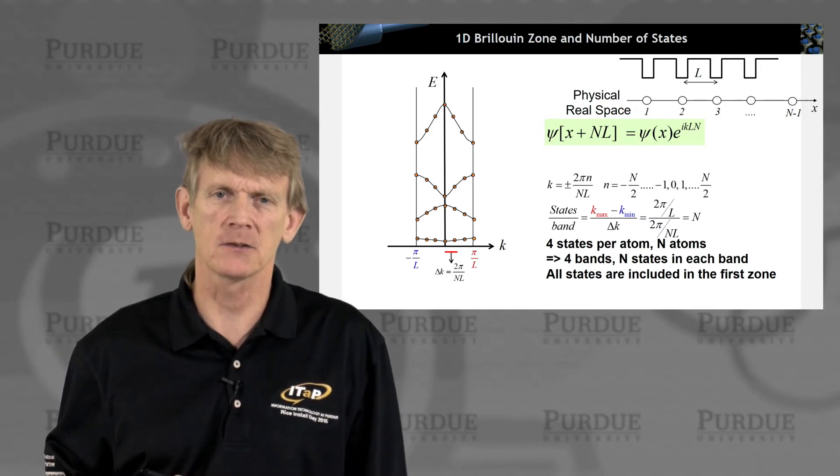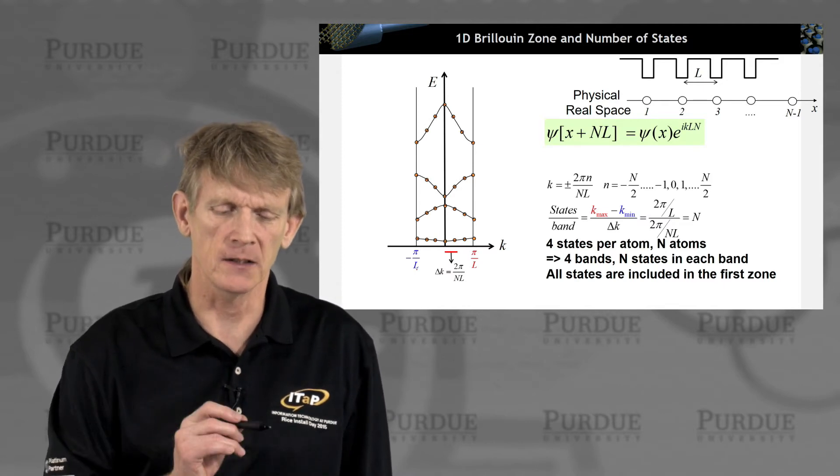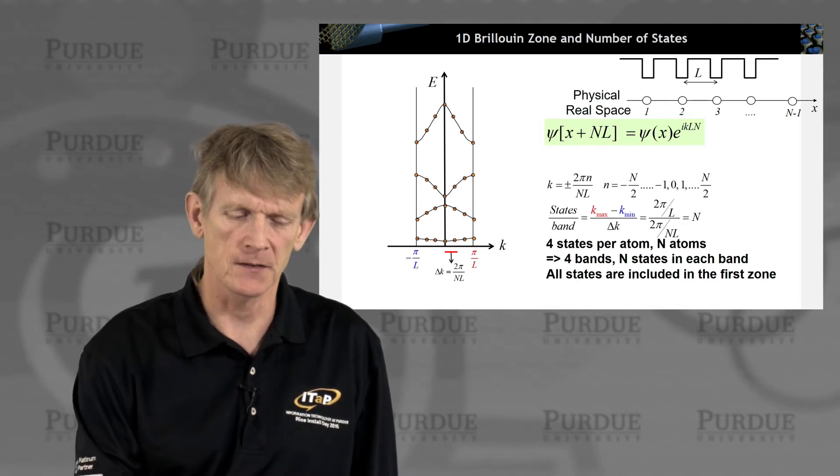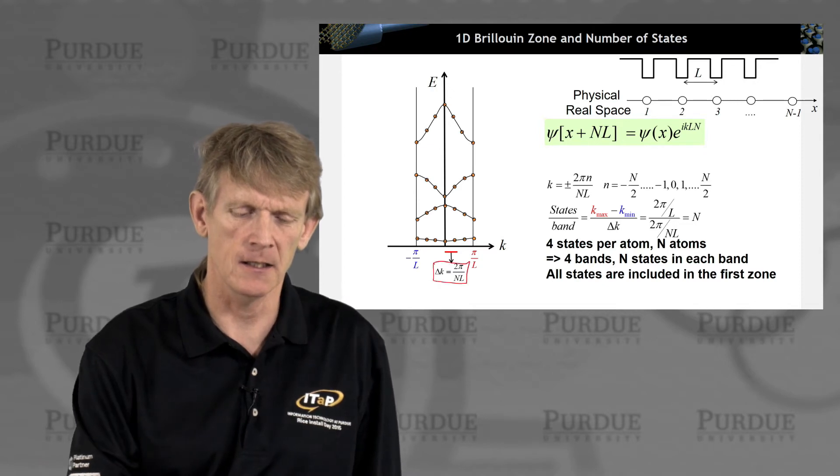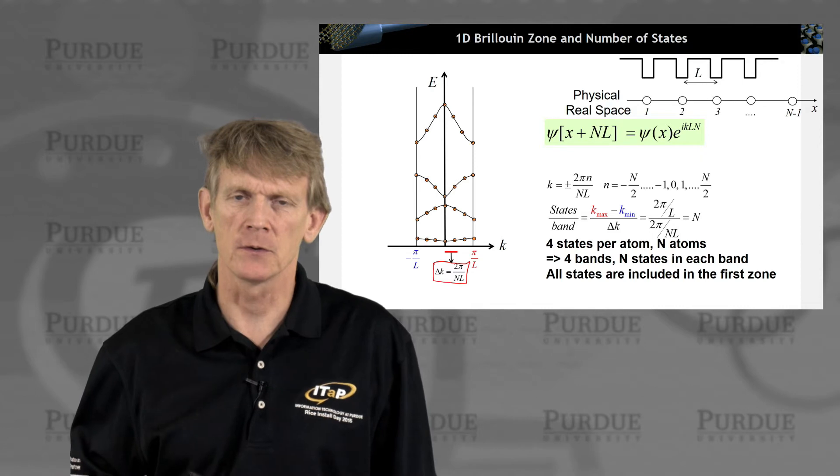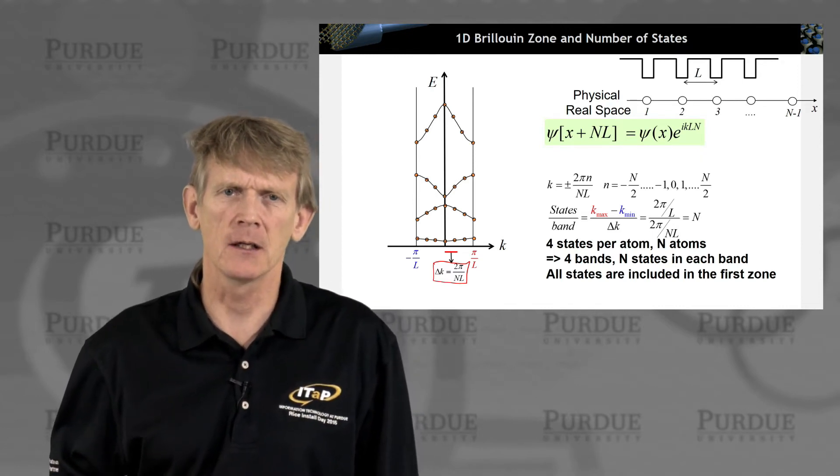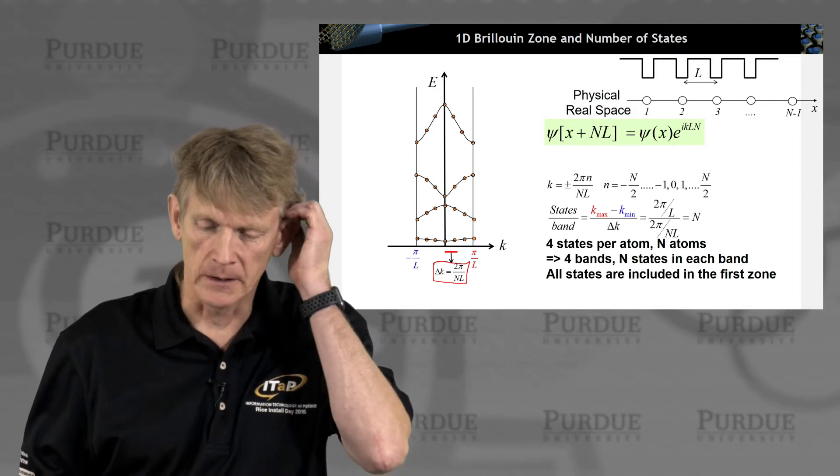So we plotted the band structure in this form here from minus pi over L to plus pi over L. The states are separated by delta k of 2 pi over capital N L. So if you make capital N very large, the spacing of delta k becomes really small.